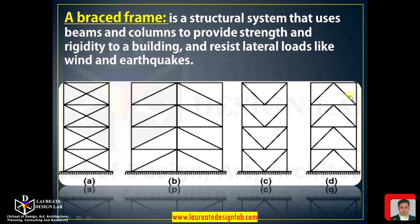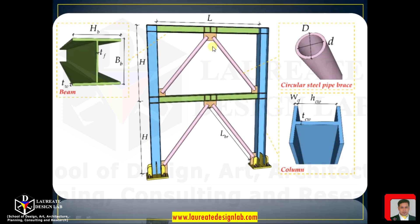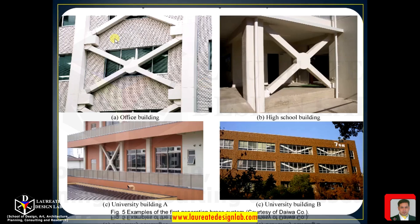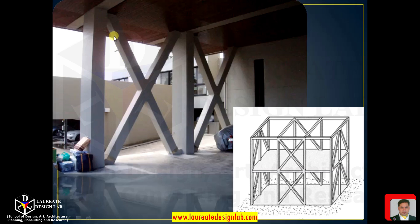Here are further examples of bracing. This shows V-shaped bracing done in steel sections. In this image, cross bracing has been used, and you can see cross bracing used across multiple buildings. In this building, V-shaped bracing has been used. This is again an example of cross bracing.